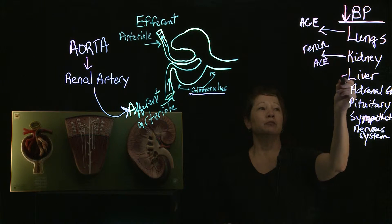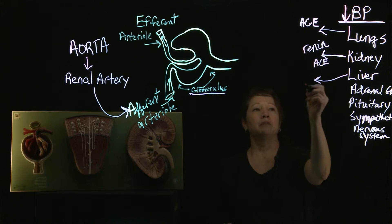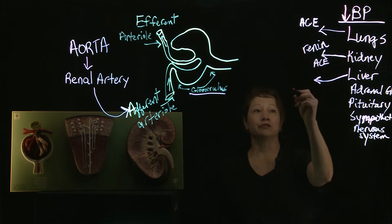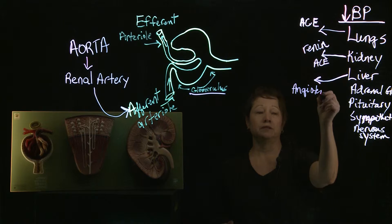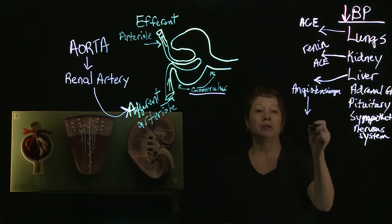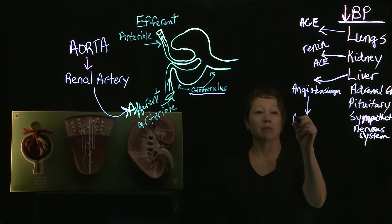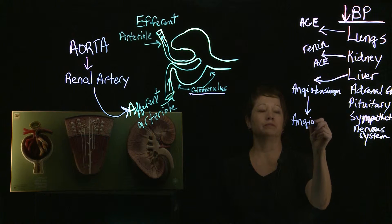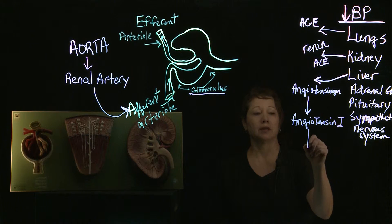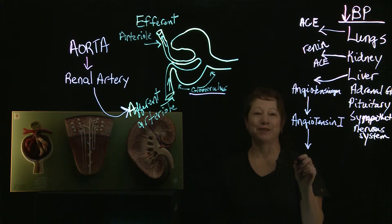The liver plays a huge role, and the primary compound it manufactures is angiotensinogen, which in the plasma gets converted to a compound called angiotensin I, which in turn gets converted to another compound in the plasma called angiotensin II.